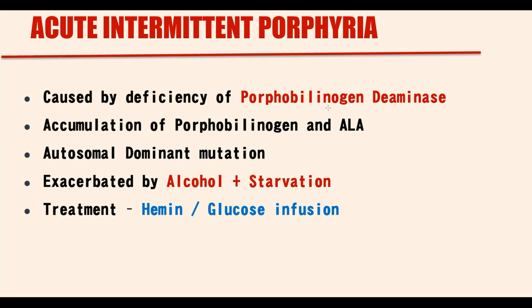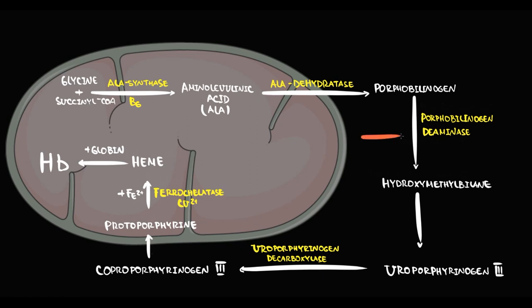But some genetic mutations can disrupt this pathway, and one of such genetic mutations causes deficiency of porphobilinogen deaminase. As a result, a condition known as acute intermittent porphyria develops. The problem here is that if there will be no porphobilinogen deaminase, then we cannot produce hydroxymethylbilane. But also this causes accumulation of porphobilinogen and ALA.